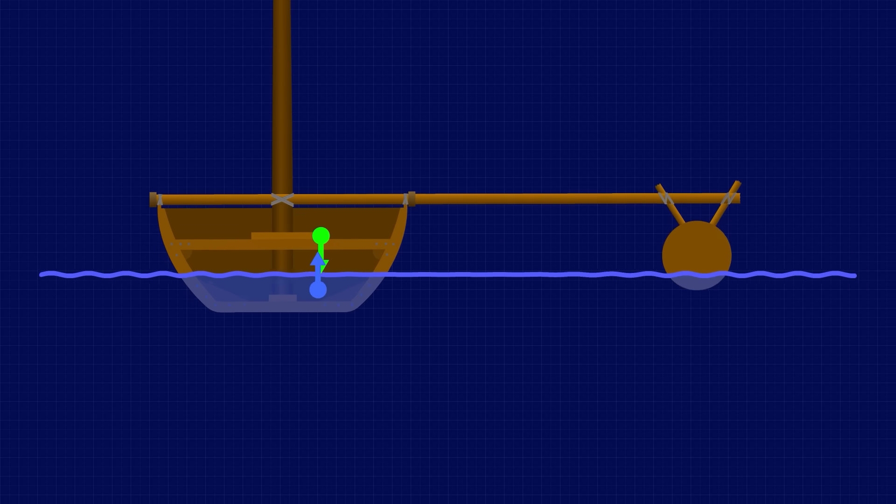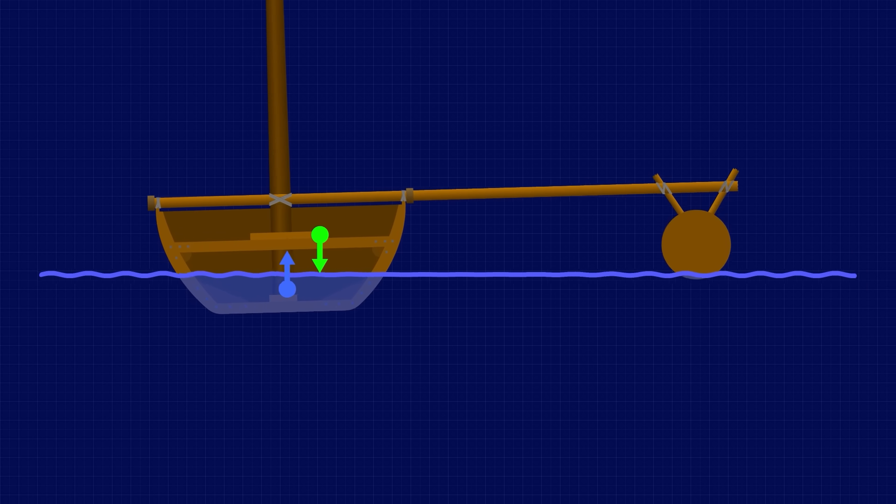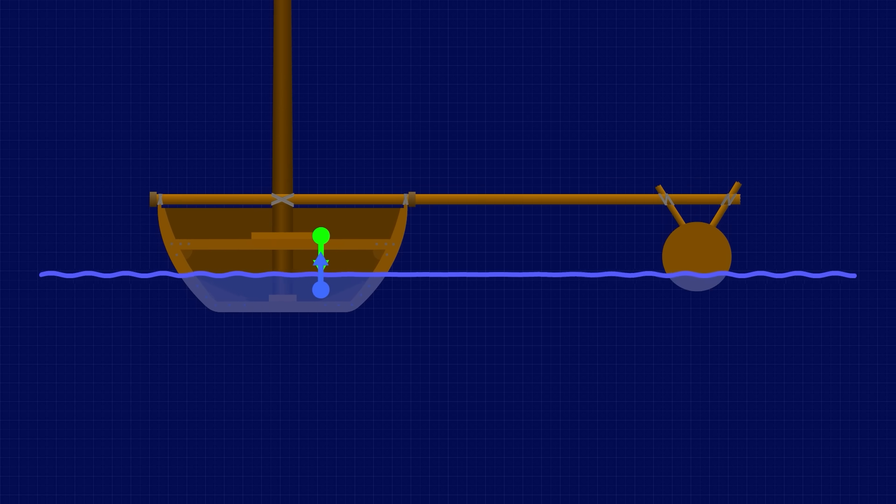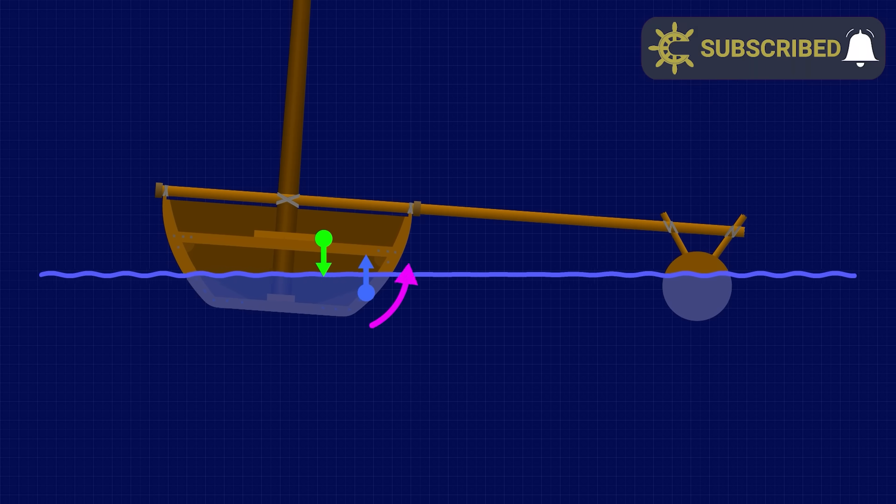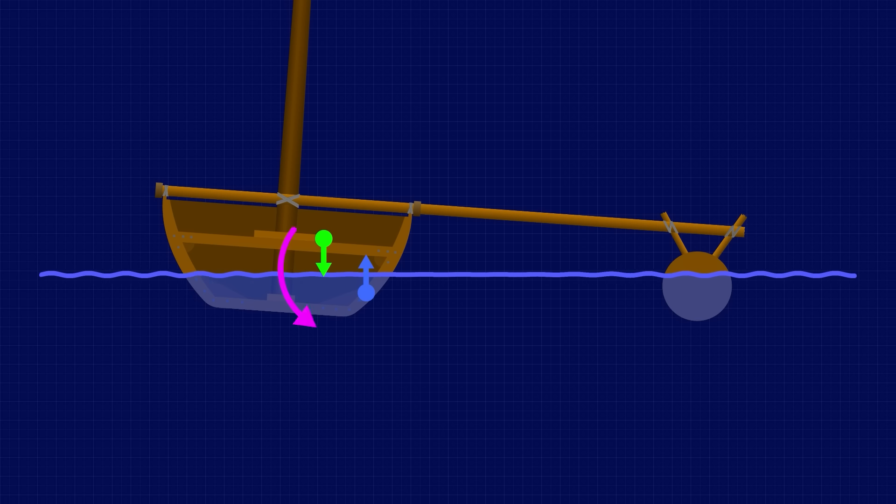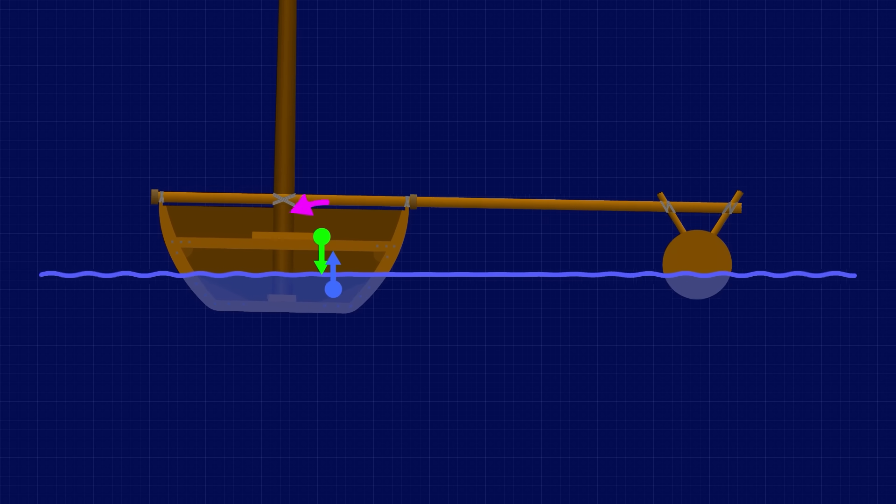Now when the outrigger canoe leans over, the righting force is no longer provided by the separation of forces alone, but instead by a movement of the centre of buoyancy, which in turn creates a separation of the forces. If you submerge the outrigger, the centre of buoyancy shifts out in that direction because that is the new average location of all the buoyancy. That shift then creates the required separation between the location of the centre of buoyancy and the centre of gravity, forcing the outrigger canoe back upright.